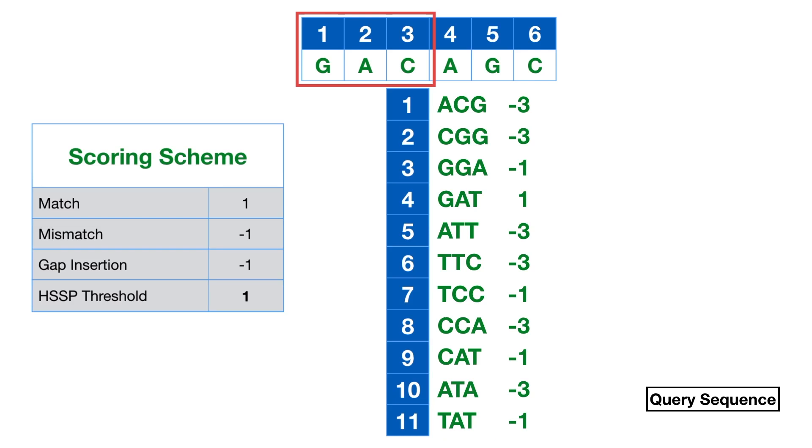We compute each of the scores of the ungapped alignments of K-mers of the query sequence with the indexed database. Next, we identify all ungapped scores greater than or equal to the HSSP threshold. We find just one score greater than or equal to 1 in position 4 of the indexed database sequence. We store this information for later use.